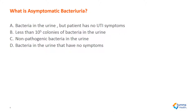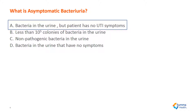So before we go any further, what is asymptomatic bacteria? Is it: (a) bacteria in the urine but the patient has no UTI symptoms, (b) less than 10 to the 5th colonies of bacteria in the urine, (c) non-pathogenic bacteria in the urine, or (d) bacteria in the urine that have no symptoms? The correct answer is (a): bacteria in the urine but the patient has no urinary tract infection symptoms.